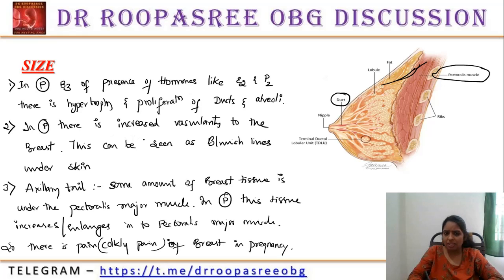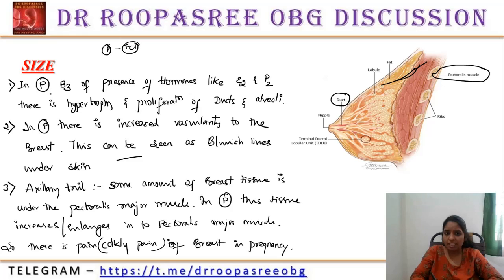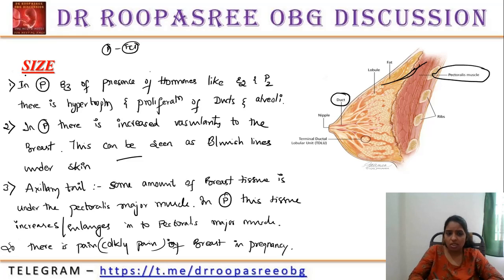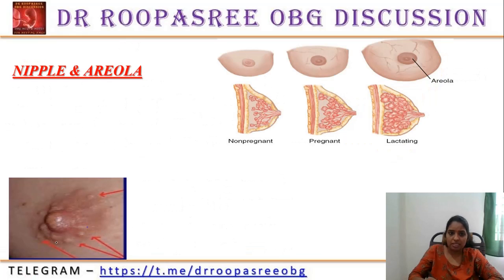To summarize the size changes: there is increased vascularity of the breast; until puberty there is only fibro-fatty connective tissue proliferation; but in pregnancy, hormones like estrogen and progesterone cause proliferation and hypertrophy of the ducts and alveoli. All three statements can be asked as MCQs.